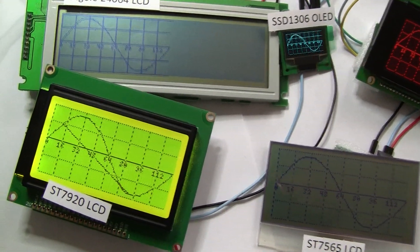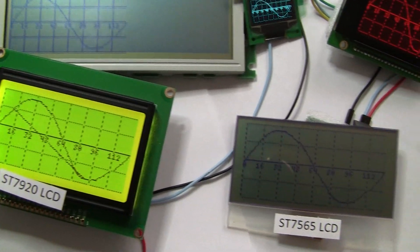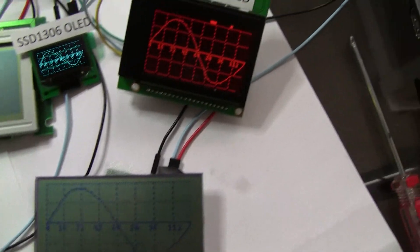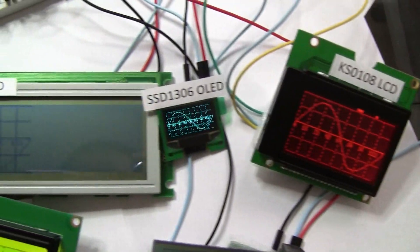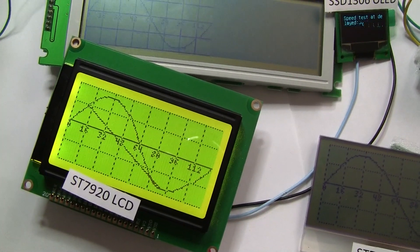Look at this, ST7920 is first to stop working, first shutdown, first done. So of the five displays, I think this one is the slowest one.